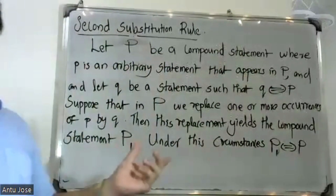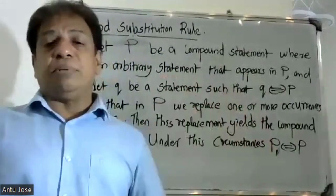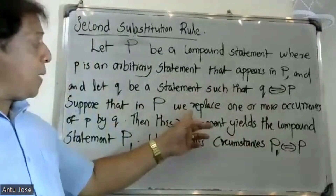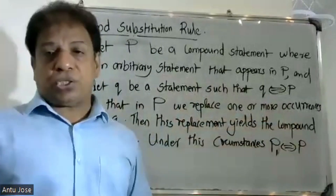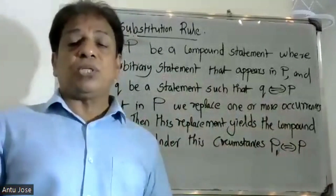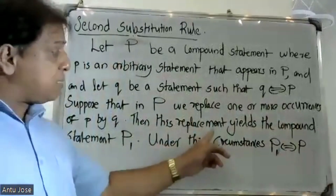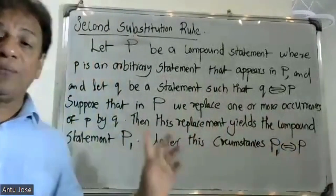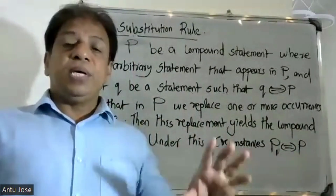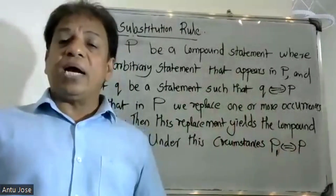Now, the compound statement is P — the small p statements. We replace one or more occurrences of p by q. Then this replacement gives the compound statement P1. So, if P1 is equal to P, then P is equal to P.